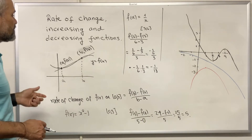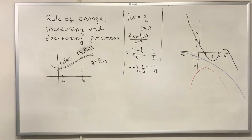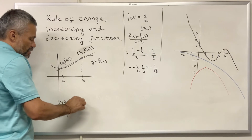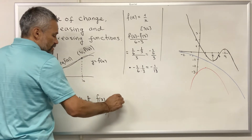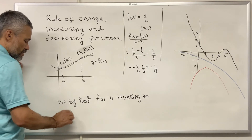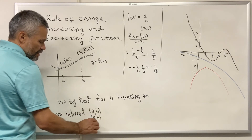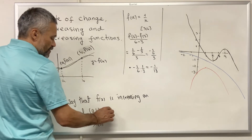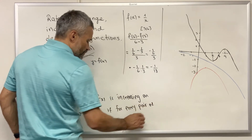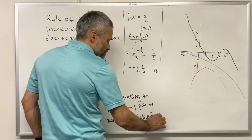These are two examples. Using the rate of change we can define the notion of increasing and decreasing functions. We say that f(x) is increasing on an interval — it could be an open interval (a,b), a closed interval [a,b], or a half-open interval — if for every pair of numbers in the interval the average rate of change is positive.